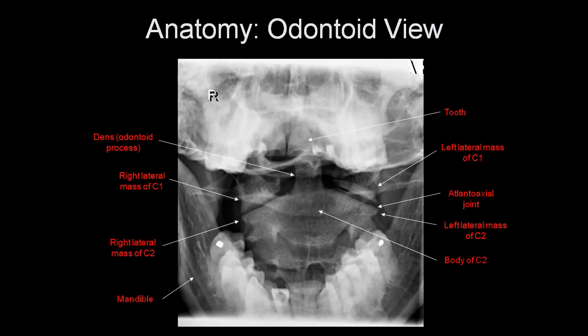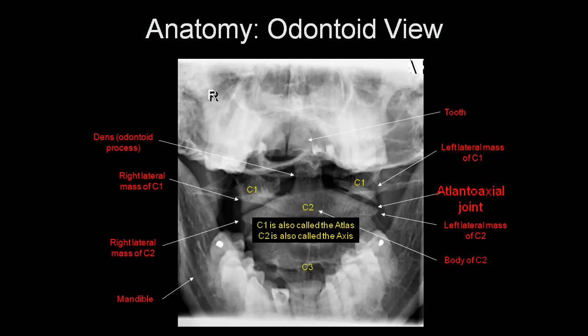On the odontoid view, you can see the teeth and the odontoid process very well. You can see the lateral masses of C1 and C2, the mandible, the body of C2, and the atlantoaxial joints. The atlantoaxial joint is also called the C1-C2 joint. C1 is also called the atlas and C2 is also called the axis.